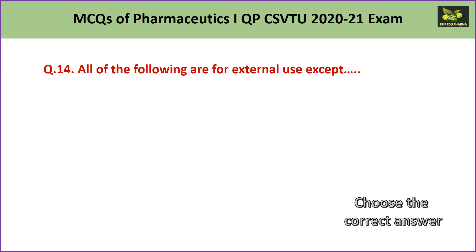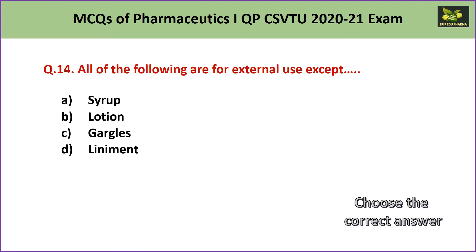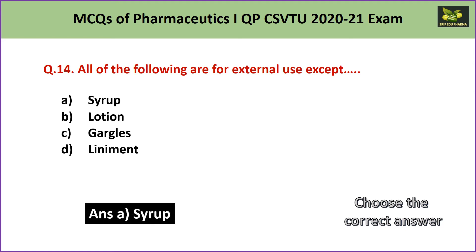Question number 14: All of the following are for external use except A. syrup, B. lotion, C. goggles, or D. liniment. The odd one is syrup, because syrup is used for internal use, while lotion, goggles, and liniment are all used for external use. So the answer is A — syrup.